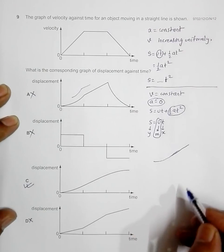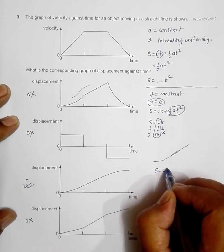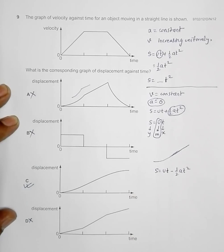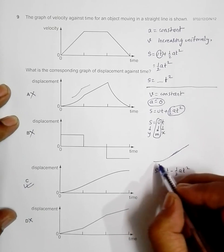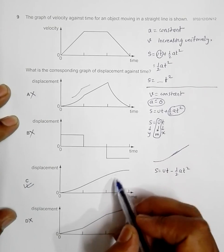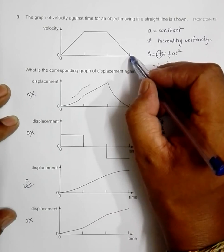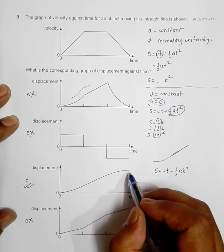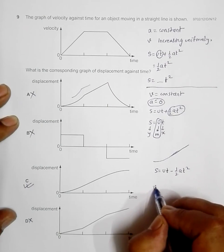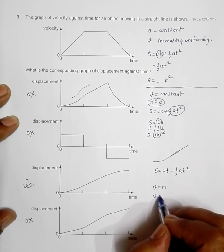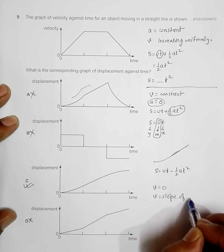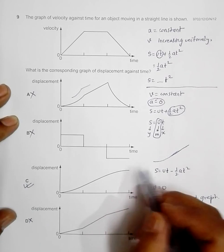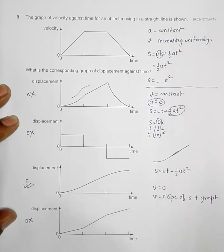In the third section, the displacement equation becomes s = ut − ½at², giving a reverse parabola. This is present in choice C. Also, since velocity finally equals zero, and velocity equals the slope of the displacement-time graph, the slope of the s-t graph must be zero at the end — which is indeed the case in choice C. Therefore, choice C qualifies from every angle and is the correct answer.